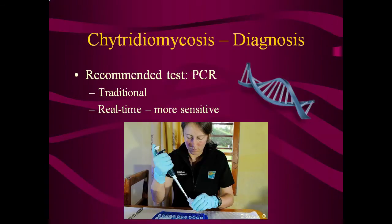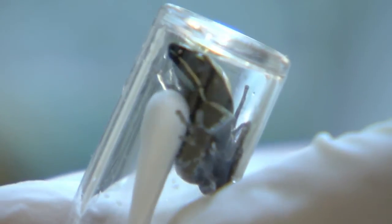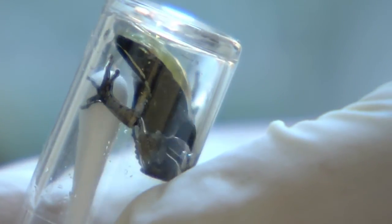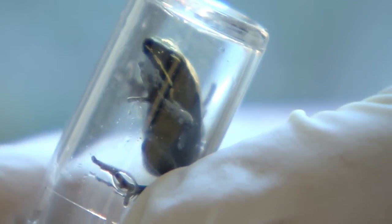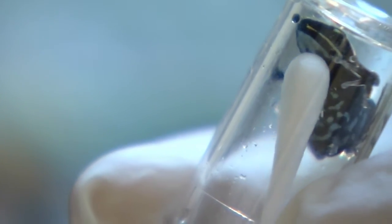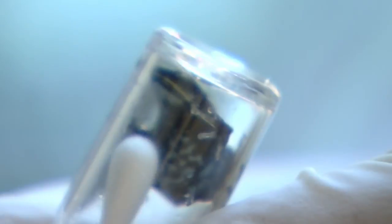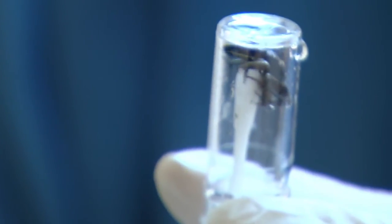The recommended antemortem test to identify the fungus in both clinically ill amphibians and non-apparent carriers is PCR. There are currently a number of PCR tests available, but the most sensitive appears to be real-time PCR. This video demonstrates one method for collecting samples to submit for PCR. Note that a plastic-handled cotton-tip swab is being used, as wooden handles can interfere with the PCR test. In this case, as the frog is so small, it is being restrained in a small plastic container. Attempts are made to swab the ventrum of the frog where most spores of BD will be if present. In very small species, encouraging them to walk on the applicator may be enough to collect the sample.